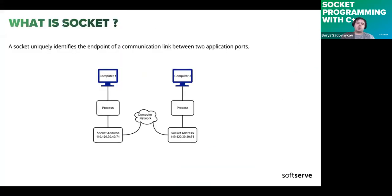A socket is one endpoint of a two-way communication link between two programs running on the network. It works the same way whether the applications are on the same host or on a remote host in one or different networks. Using a socket on the same host is possible via the loopback network interface, which is useful for IPC — inter-process communication with sockets. In order to identify which socket is used by a particular application, a socket is bound to a port number so the system can identify the application that data is destined for.